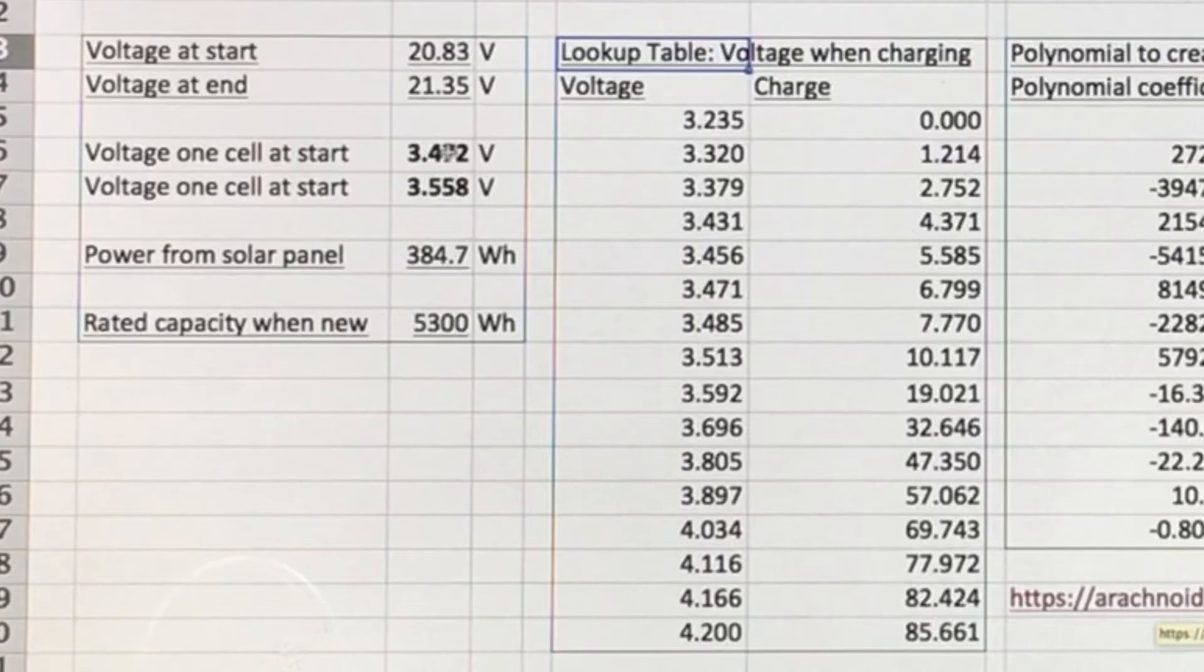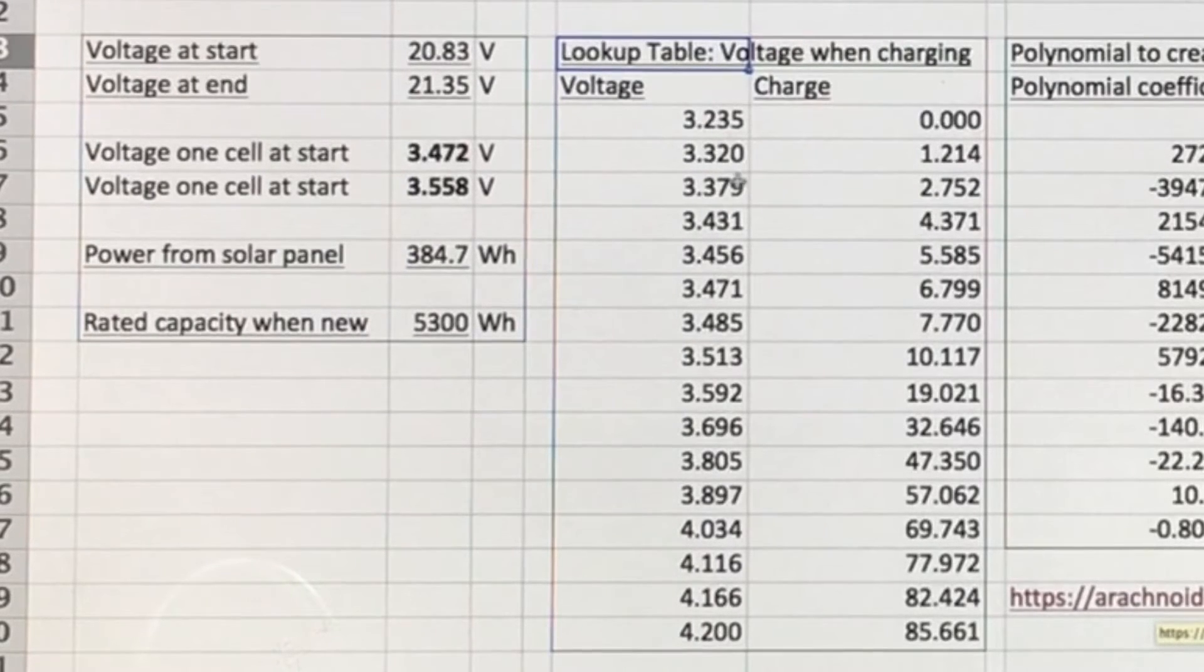So then we need to work out for each of these voltages what's the state of charge of the battery. Unfortunately these voltages sit in between here. So we're actually very close to this voltage here, but this voltage is in between those two. So we need a way of working out intermediate voltages and what the state of charge is there.